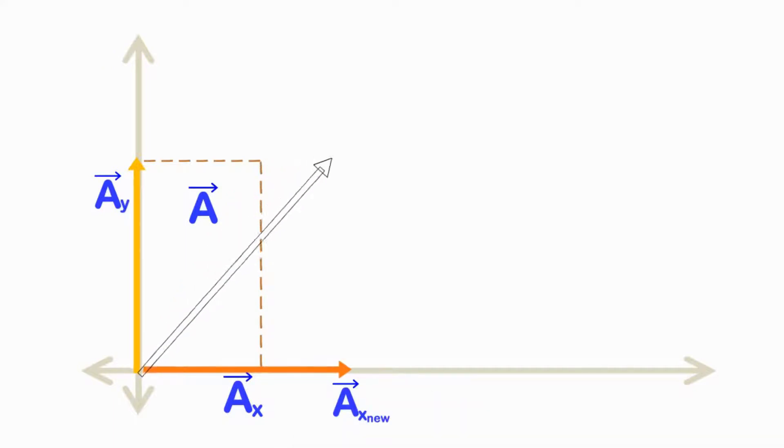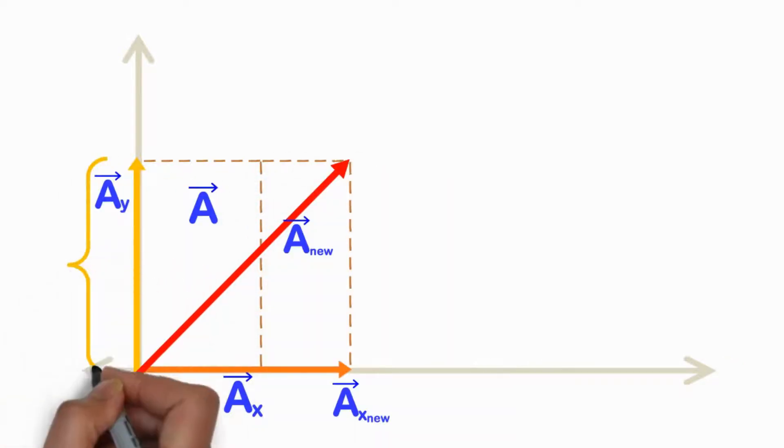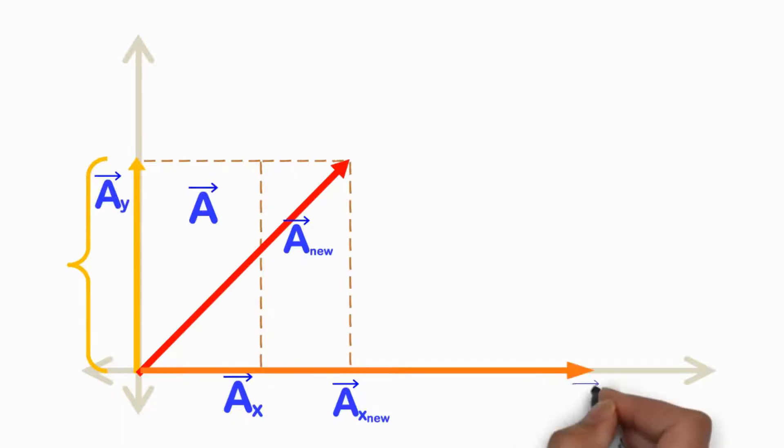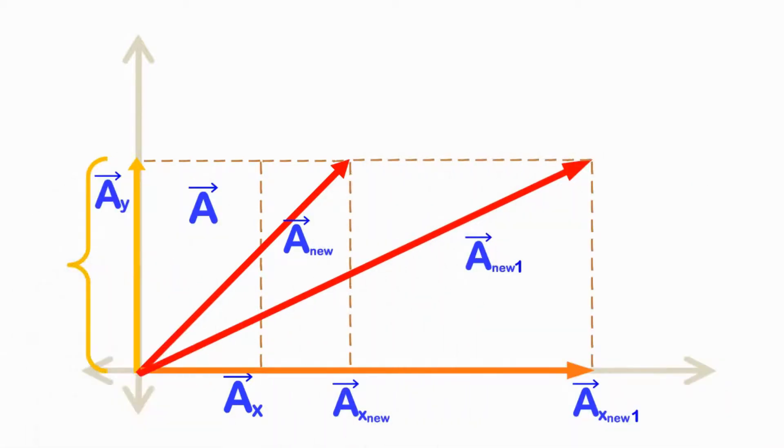then the original vector will change, but the vertical component of the vector will remain as it is. Let us observe one more time. If I again change the x-component of the vector, the original vector will change, but the y-component will remain as it is. This is an important property of vectors.